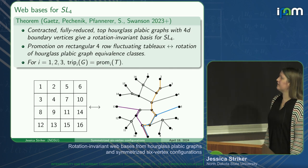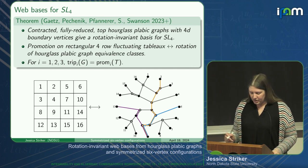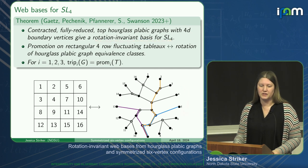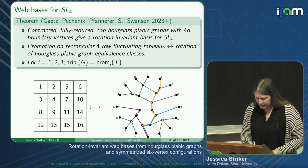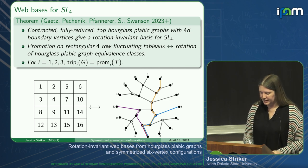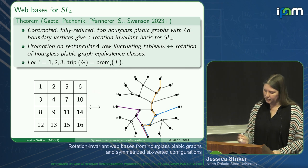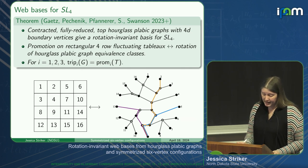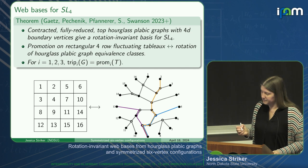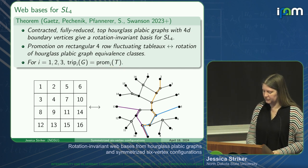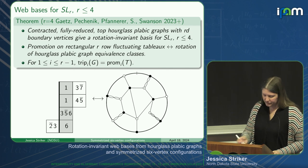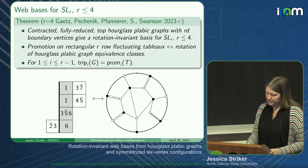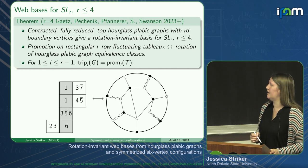Here is a restatement of our theorem with more combinatorial details. Our web basis is rotation invariant because we have diagrams you can rotate and get back a basis element. We have a bijection between tableau and equivalence classes of these diagrams such that promotion over here corresponds to rotation of the web, and there are trip permutations that correspond to promotion permutations on the tableau side. This is a unified way to state all of these things for R equals 2, 3, and 4.